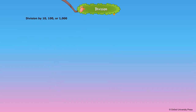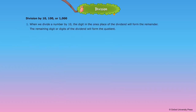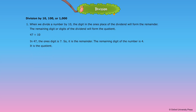Division by 10, 100, or 1000. Rule 1: When we divide a number by 10, the digit in the ones place of the dividend will form the remainder, and the remaining digit or digits will form the quotient. For example, 47 divided by 10: the ones digit is 7, so it is the remainder, and the remaining digit 4 is the quotient. Quotient is equal to 4 and remainder is equal to 7.